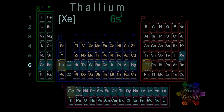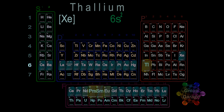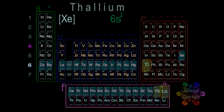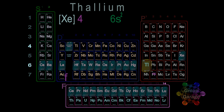Now we're also filling the f-block, and we see all 14 elements. The principal energy level we're filling with these elements is 2 above where they're shown in the table. Writing the lowest period first, we have 4, followed by the 14 electrons, f14.